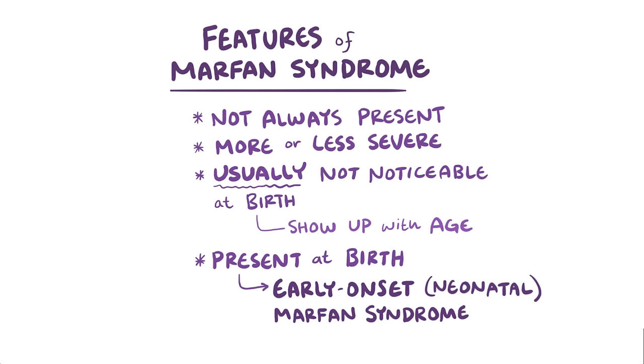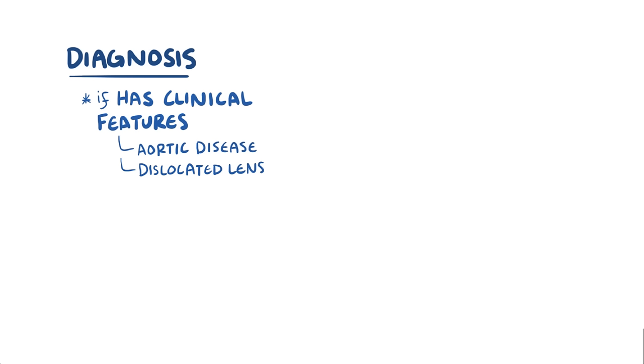As for diagnosis, a person is diagnosed with Marfan syndrome if they have clinical features of Marfan syndrome like aortic disease, a dislocated lens, family history, and FBN1 mutations.